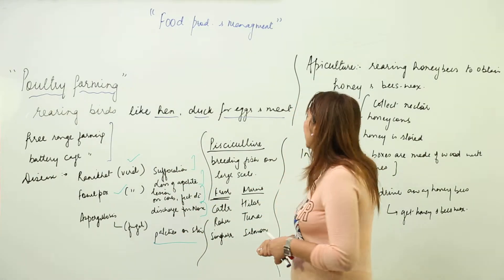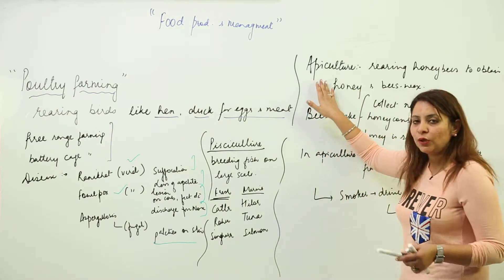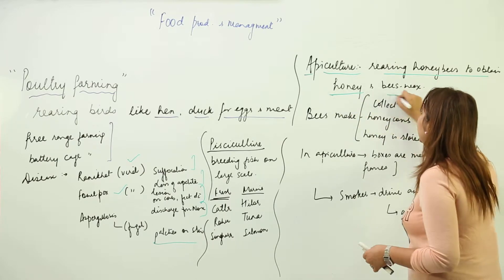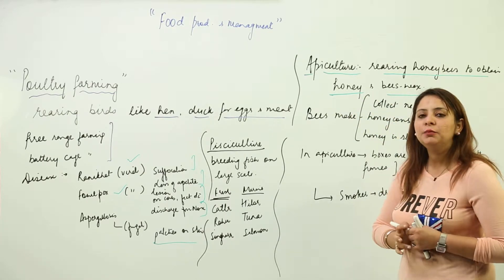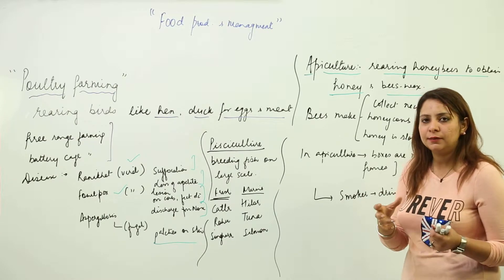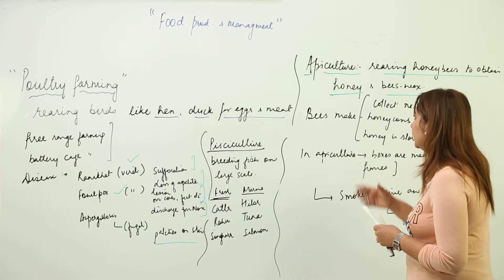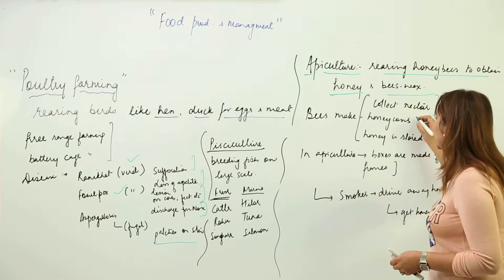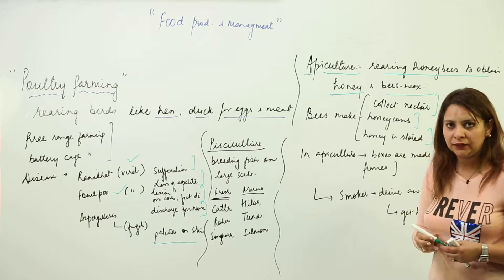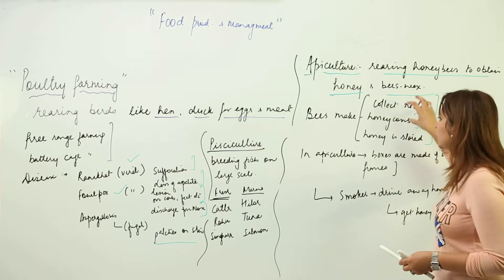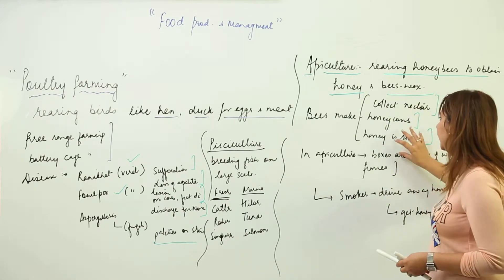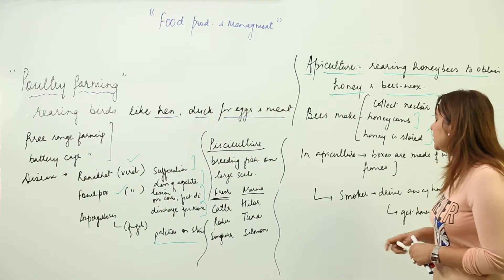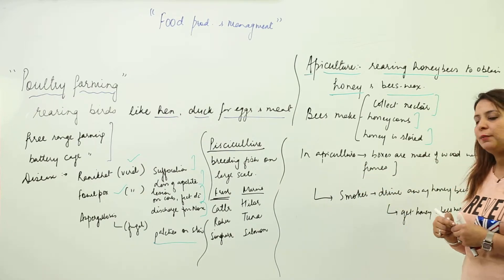Now starting with apiculture. Apiculture means rearing honeybees to obtain honey and beeswax. From honeybees we get beeswax and honey. Usually, bees collect nectar from flowers and make honeycombs where they store honey.